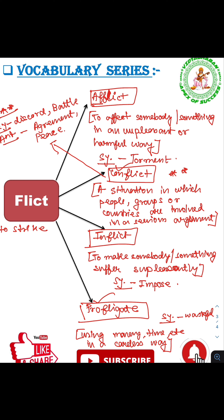So we covered from root 'flict': afflict, conflict, inflict, and profligate. These are the active words. If you want to learn the root word along with its prefix and suffix to understand word meanings, make sure you watch, comment in the comment box, and subscribe. Thank you.